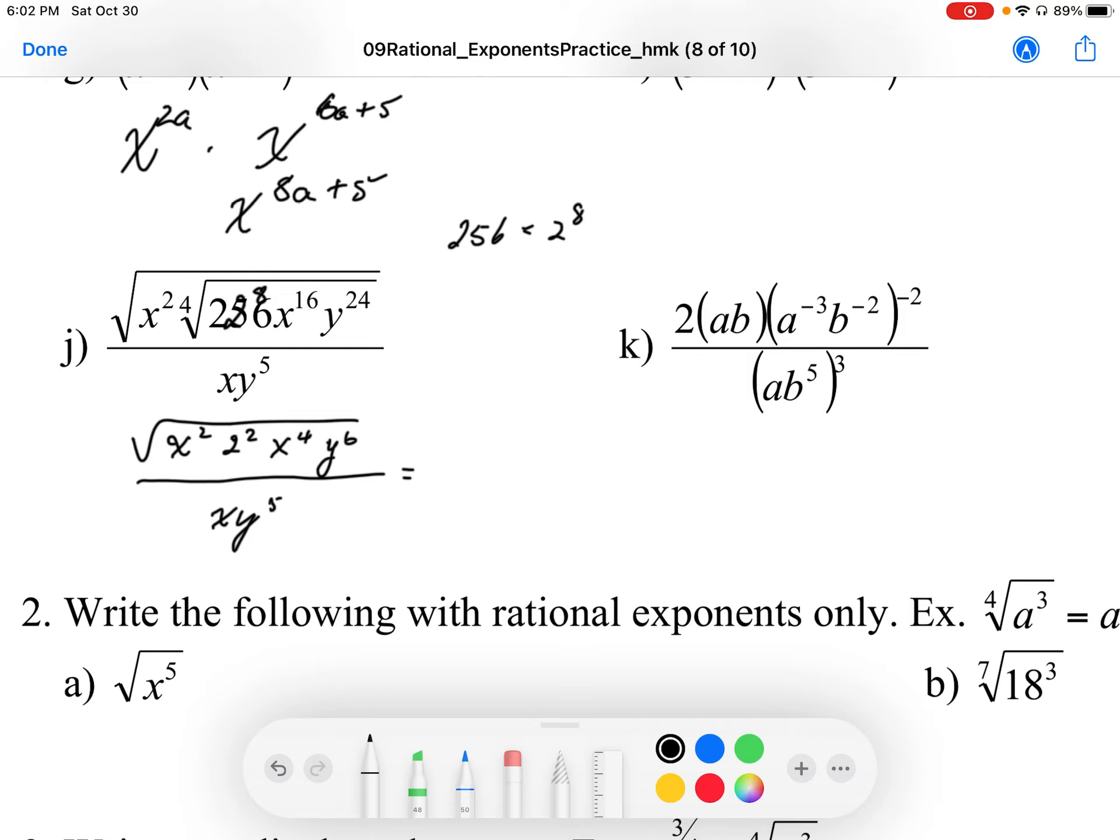And then, because that's a square root, we can either combine first, so x to the power 4 and 2 become x to the power 6. The square root of x to the power 6 is x to the power 3. The 2 squared comes outside as well, and the y to the power 6 becomes y to the power 3 on the outside.